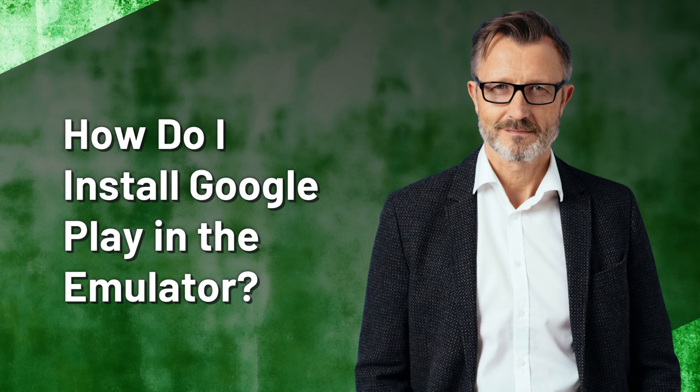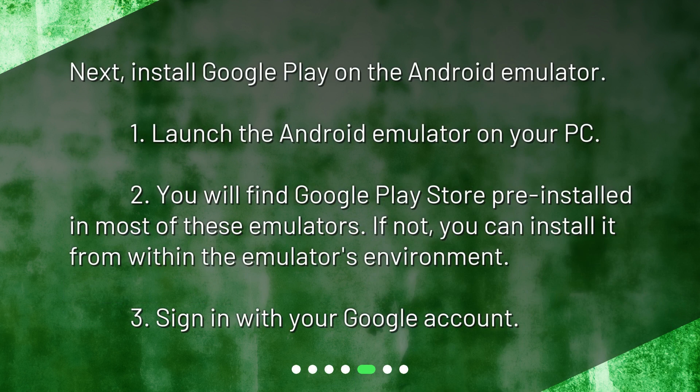How do I install Google Play in the emulator? Next, install Google Play on the Android emulator. 1. Launch the Android emulator on your PC. 2. You will find Google Play Store pre-installed in most of these emulators. If not, you can install it from within the emulator's environment. 3. Sign in with your Google account.